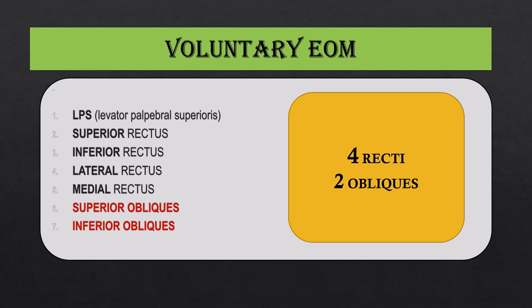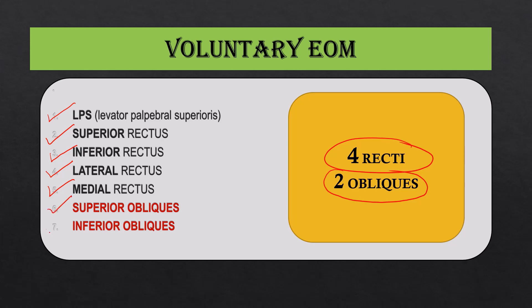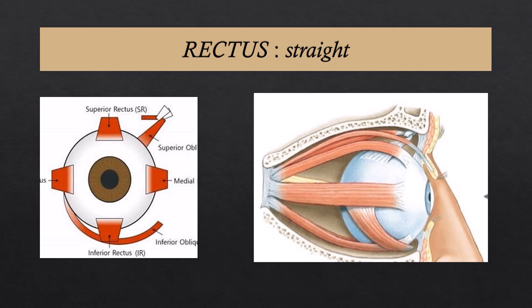The voluntary extraocular muscles are seven in total: the levator palpebrae superioris in the upper eyelid, four recti — superior rectus, inferior rectus, lateral rectus, and medial rectus — and two oblique muscles: the superior oblique and the inferior oblique. The word 'rectus' means straight, so the recti have a mostly straight course in the orbit. The obliques, as the name suggests, have an oblique course in the orbit.